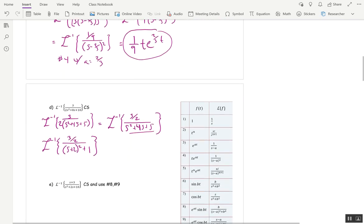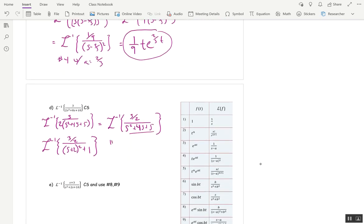Now where does that get me? That gets me to formula 8 with a equal negative 2 and b equal 1, and 3 halves is a constant. So by formula 8, this is going to be 3 halves, e to the negative 2t, and then sine t.